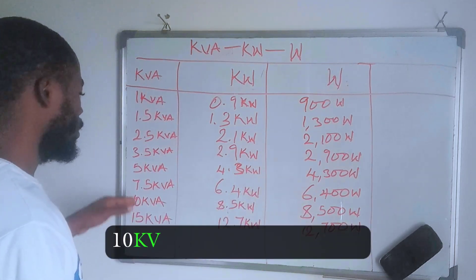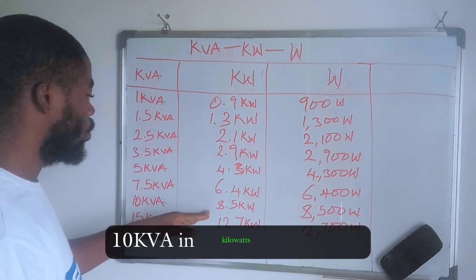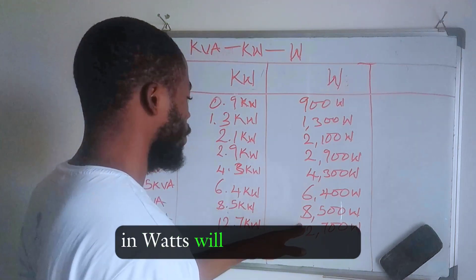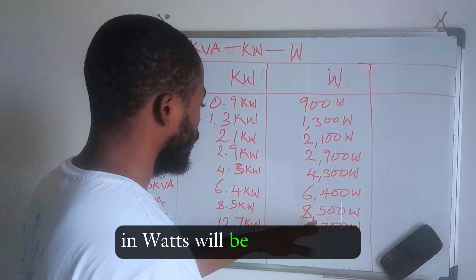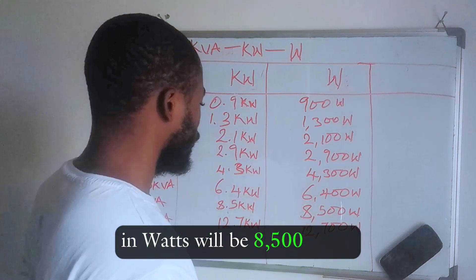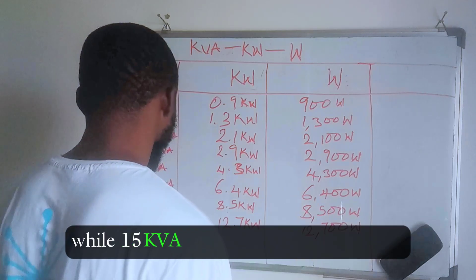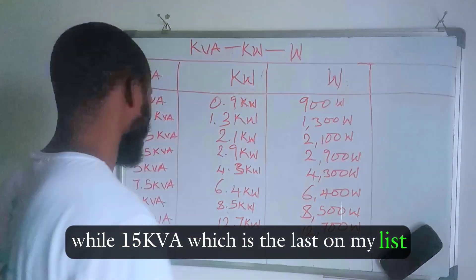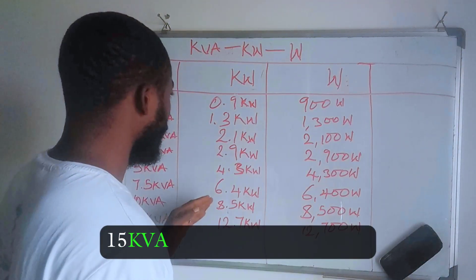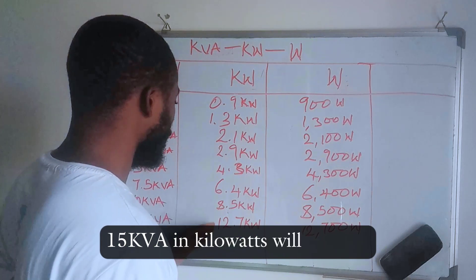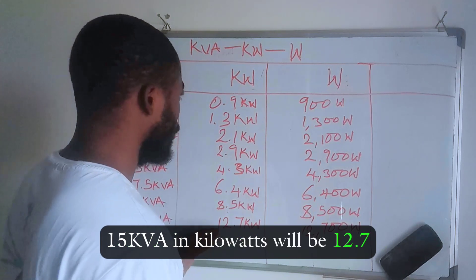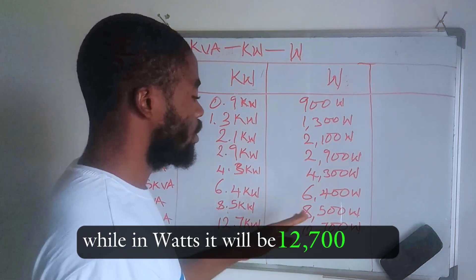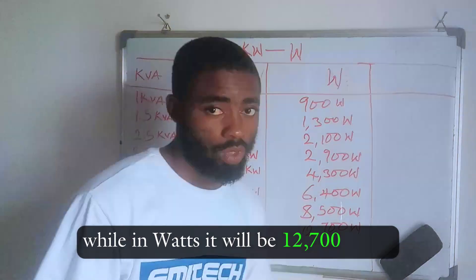10 kVA in kilowatt will be 8.5, and in watts will be 8,500 watts. 15 kVA — the last on the list — in kilowatt will be 12.7, and in watts it will be 12,700 watts.